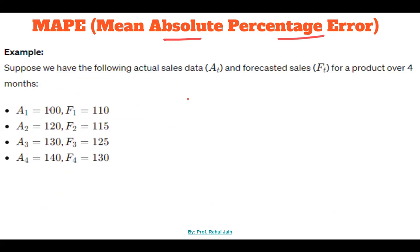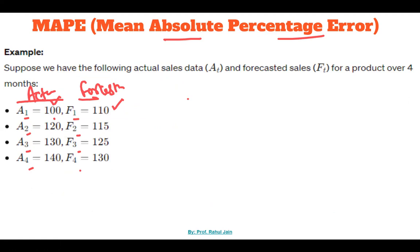Now let's go to the problem. Here we have some actual values — this is our actual sales data at particular times t1, t2, t3, t4 — and this is our forecasted data at times t1, t2, t3, t4. In month one, this is our actual sales versus the forecasted value. In month two, this is our actual sales versus the forecasted value. In month three, this is our actual sales versus the forecasted value.